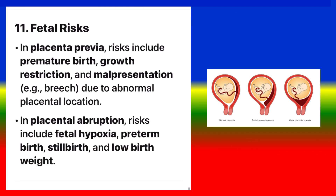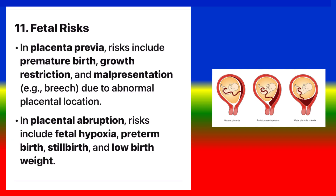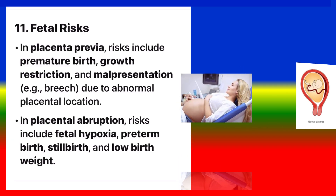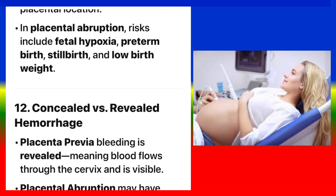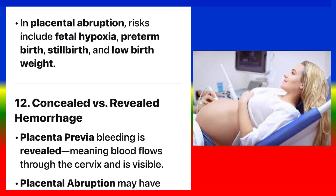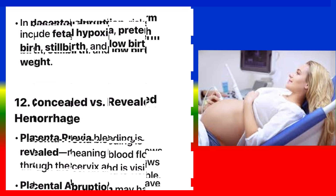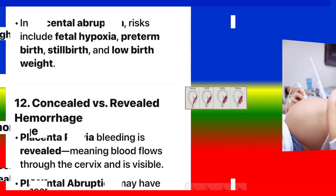Fetal risks. In placenta previa, risks include premature birth, growth restriction, and malpresentation, e.g. breech, due to abnormal placental location. In placental abruption, risks include fetal hypoxia, preterm birth, stillbirth, and low birth weight.